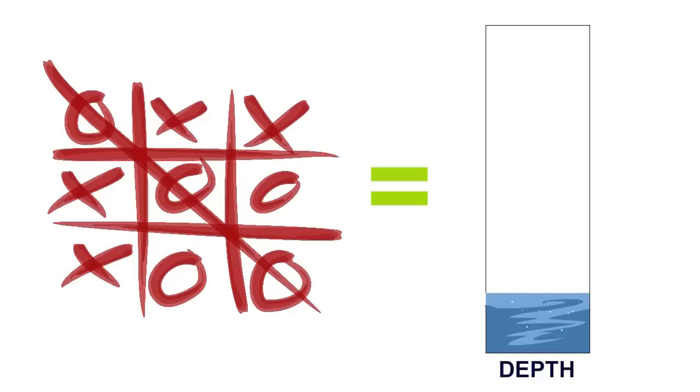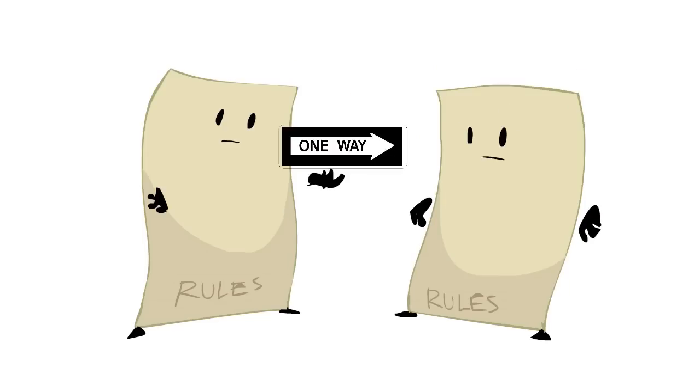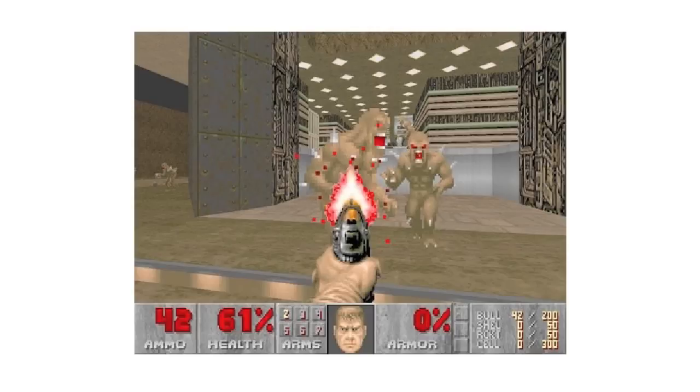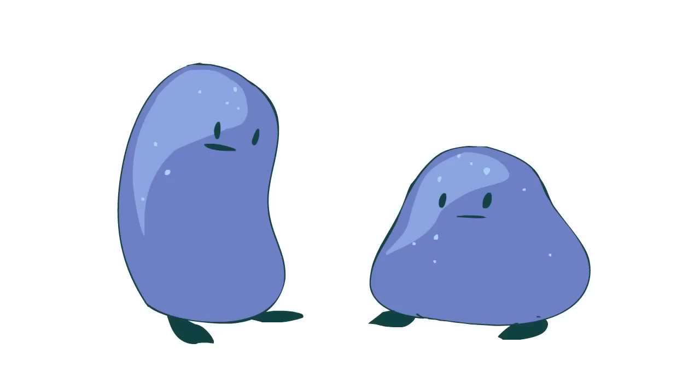So, for example, tic-tac-toe is light on depth, because the rules don't create a plethora of experientially different possibilities for the player. Early shooters often struggled with this as well, because even though many minor variations could occur, they were often not very experientially different.